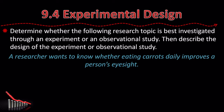Let's determine whether the following research topic is best investigated through an experiment or an observational study, then describe the design. A researcher wants to know whether eating carrots daily improves a person's eyesight. Well, an experiment might be kind of hard here — you'd have to have a lot of people and make sure they actually eat carrots daily, and you're probably not going to see quick results; it has to be over a long period of time. So probably the best thing to do is an observational study. We could conclude a relationship between eating carrots and improved eyesight, but that doesn't necessarily mean that eating carrots does in fact improve eyesight.